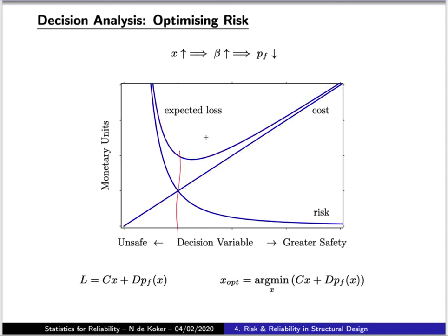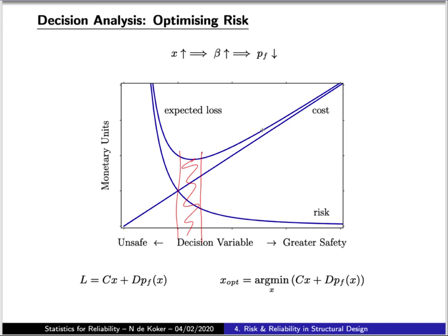There is a range of values of our decision variable where our expected loss is as low as we can make it. Choosing a value lower than this optimal range leaves our risk exposure too high, whereas choosing a value higher than the optimal means we are paying much more than necessary. The optimal value of the decision variable will change if either the marginal cost of safety changes or the cost of failure changes.